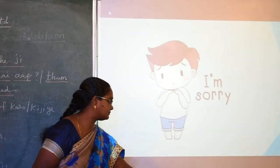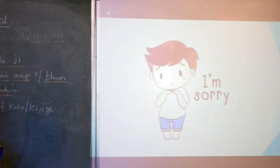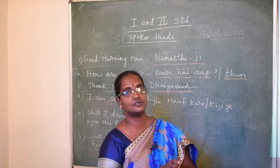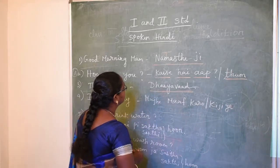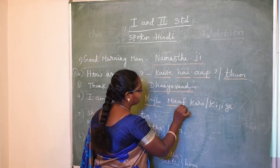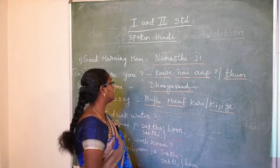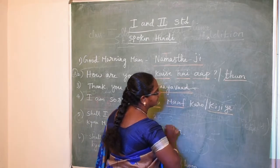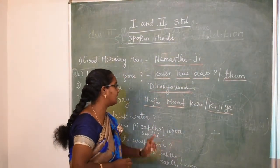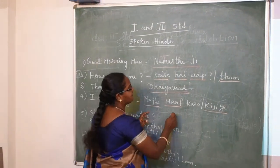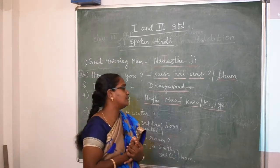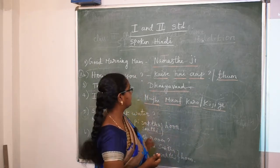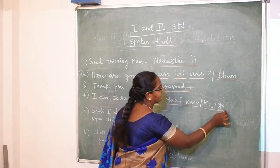Next is 'I am sorry.' See this picture of a boy saying sorry. When you commit a mistake — sorry mummy, sorry daddy — how will you say it in Hindi? You say 'Mujhe maaf kijiye.' When asking sorry with elders, you should say 'Mujhe maaf kijiye.'